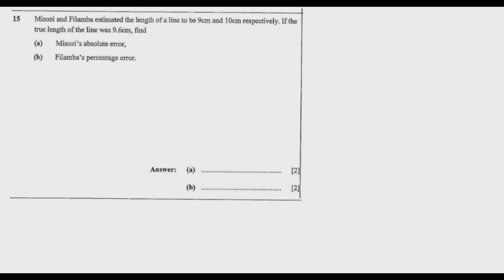Let us assume that the absolute error AE is given by the observed value of X minus the true value of X. In this case, we have what has been observed by Misozi, so Misozi measured it to be 9 centimeters.